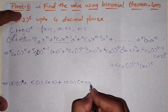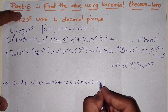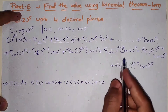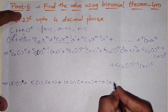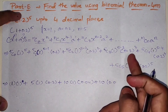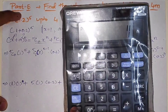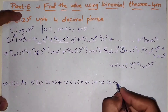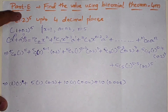Continuing: 0.2 to the power of 2 equals 0.04. So the third term is 10 times 0.04 equals 0.4. Next, 5C3 is 10. 0.2 to the power of 3: 0.2 times 0.2 times 0.2 equals 0.008. So that term is 10 times 0.008 equals 0.08.